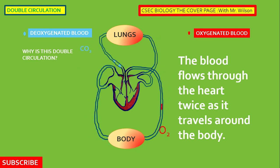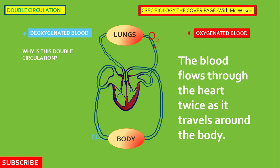Let's look at it one more time. Oxygenated blood — shown in red — comes down through the heart, moves through the body, drops off the oxygen, and picks up carbon dioxide. The carbon dioxide then goes through the heart, gets back to the lungs, gaseous exchange takes place, and there we go again — oxygen flowing around the body, carbon dioxide going back up. This is a continuous process.